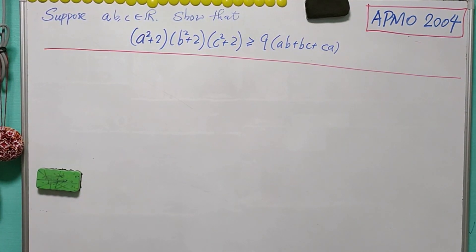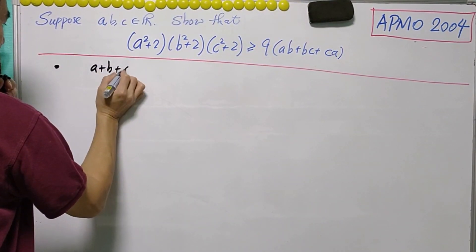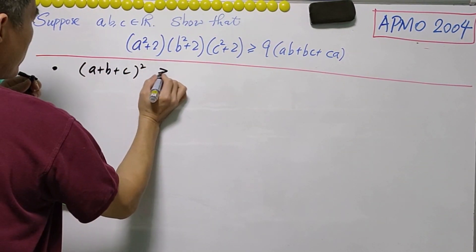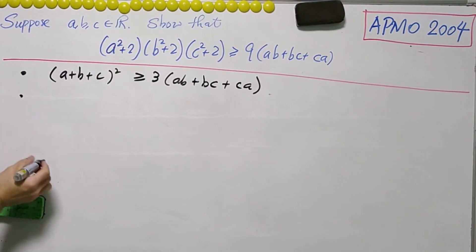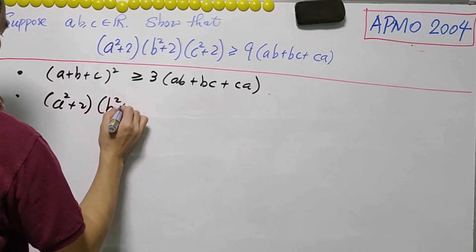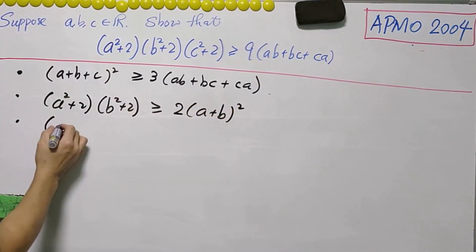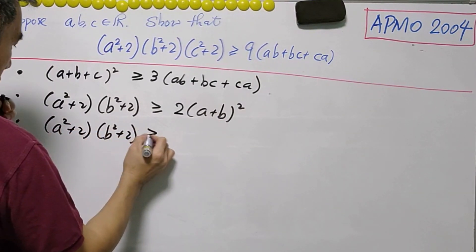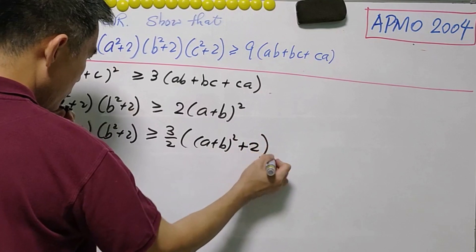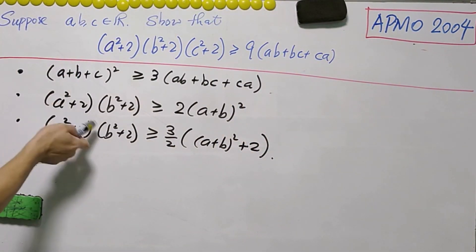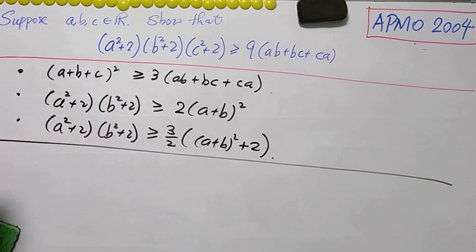There are many different methods to get the answer. The method I'm going to present here needs three results to support it. Number one: (A+B+C)² ≥ 3(AB+BC+CA). Number two: (A²+2)(B²+2) ≥ 2(A+B)². Number three: (A²+2)(B²+2) ≥ (3/2)((A+B)²+2). I'll show them one by one, then combine all results to prove the inequality. All of the techniques used here are only AM-GM inequality.